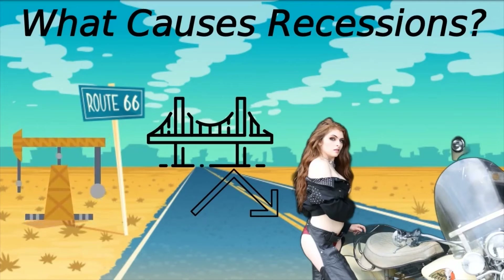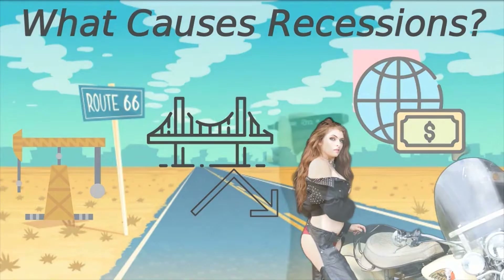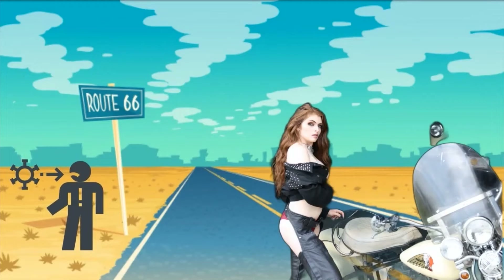For example, a sudden sustained spike in oil prices due to a geopolitical crisis might simultaneously raise costs across many industries, or a revolutionary new technology might rapidly make entire industries obsolete — in either case triggering a widespread recession. The spread of the COVID-19 epidemic resulting in public health lockdowns in 2020 is an example of the type of economic shock that can cause a recession. It may also be the case that other underlying economic trends are at work leading toward a recession, and an economic shock just triggers a downturn.